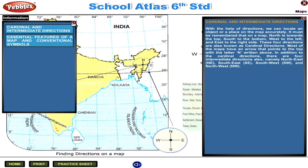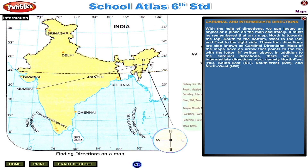Cardinal and Intermediate Directions. With the help of directions, we can locate an object or a place on the map accurately. On a map, north is towards the top, south to the bottom, west to the left and east to the right side. These four directions are also known as cardinal directions. Most maps have an arrow that points to the top with the letter N written above. In addition to the cardinal directions, there are four intermediate directions: north-east (NE), south-east (SE), south-west (SW), and north-west (NW).